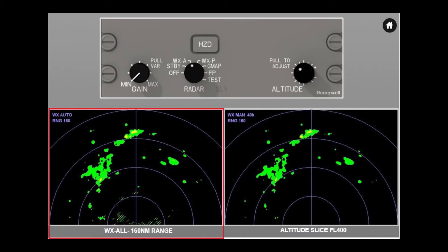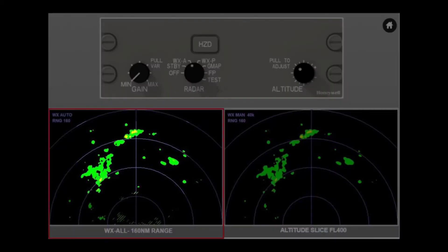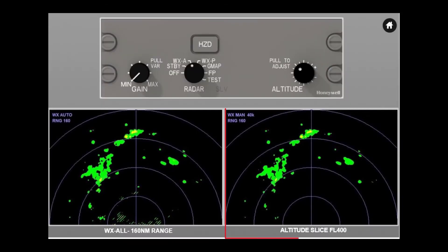The left-hand display will be in WEX ALL mode, the automatic weather detection mode. The weather on this display is separated into flight path solid and secondary, hashed, off-path weather. On the right-hand display, we'll be looking at altitude slices.